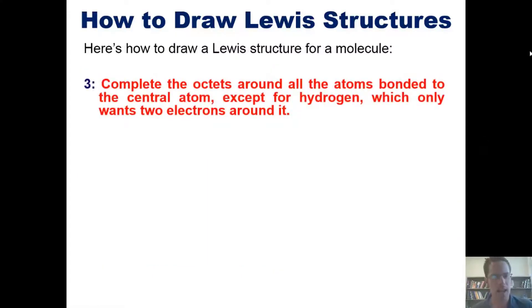Step three, complete the octets around all the atoms bonded to the central atom, except for hydrogen, which only wants two electrons around it. That is, hydrogen only wants a two-tet, like helium.